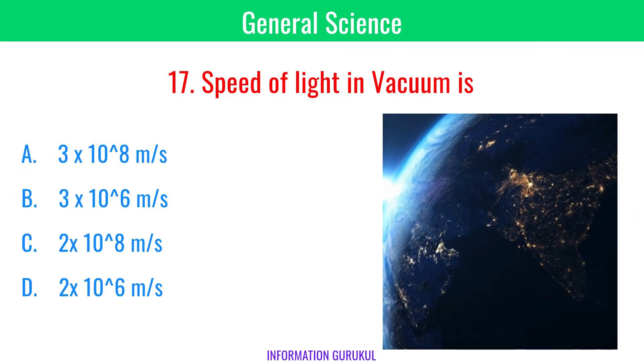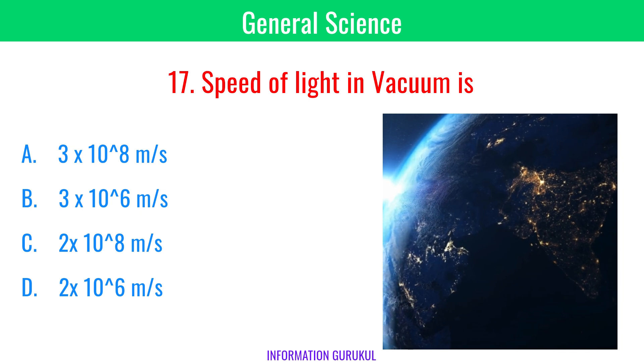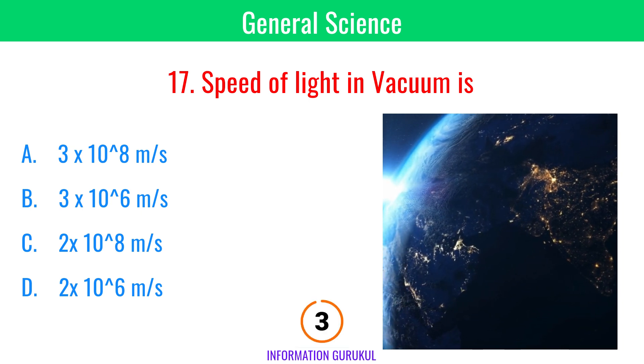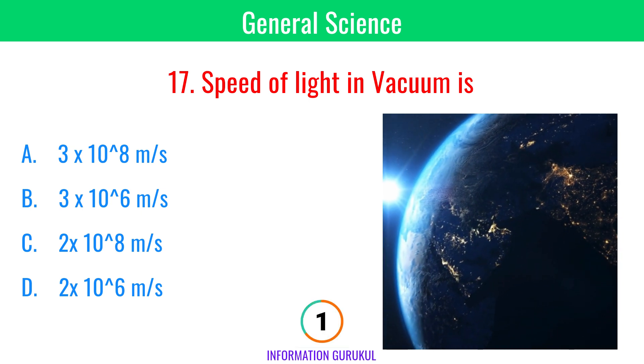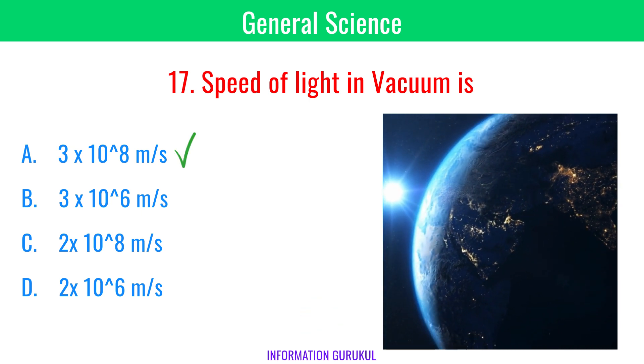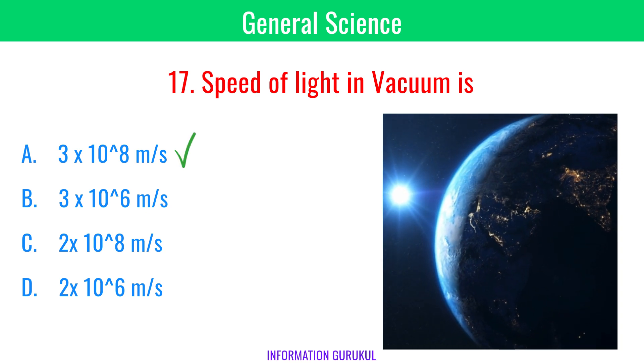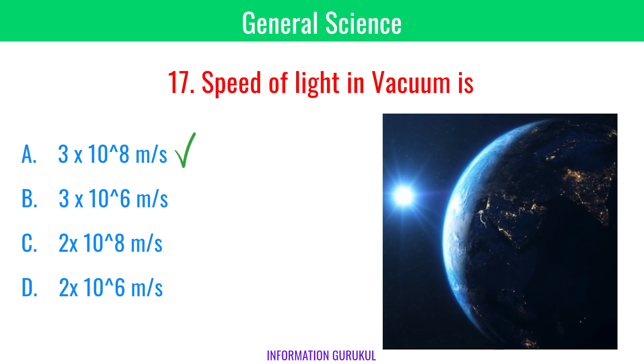Speed of light in vacuum is 3 × 10⁸ meters per second.